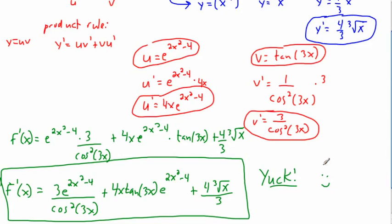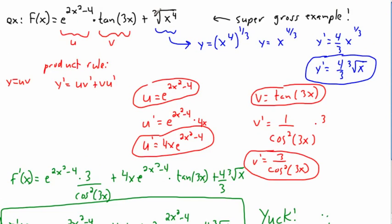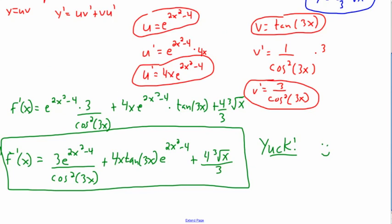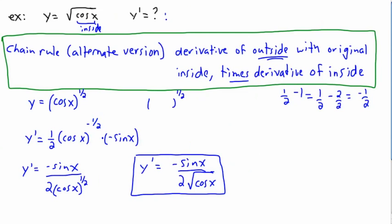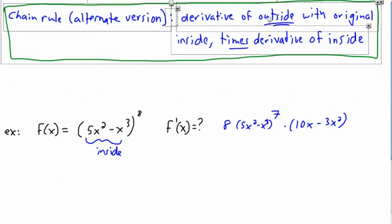We can still handle even the most horrible-looking examples. This one required: dealing with a simple power rule piece, a product rule for the middle, and chain rule twice — once to find u prime and once to find v prime. Hopefully you can see the usefulness of chain rule not just for gross examples but for the more reasonable ones you'll see in high school or introductory university calculus.